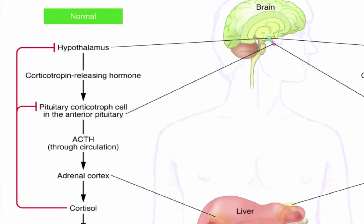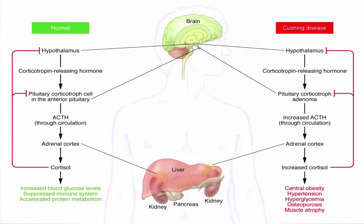Sometimes this perfectly tuned system can be overwhelmed — during immunosuppressive treatment or as the result of an adenoma along the HPA pathway. Whatever the etiology, high levels of cortisol can lead to anything from osteoporosis to diabetes, and if left untreated can even be life-threatening.